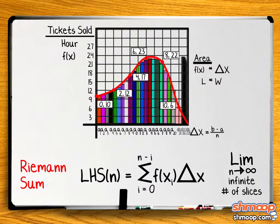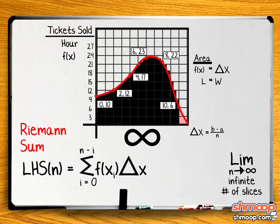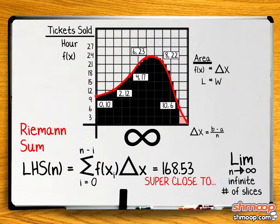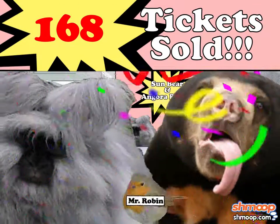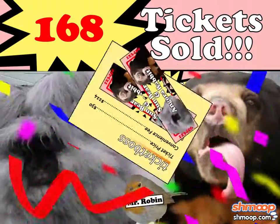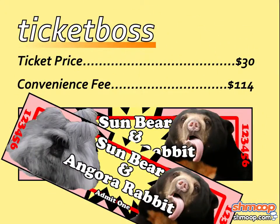Taking this limit as n approaches infinity gives us a total area of 168.53, which is super close if you compare it to the approximation found with rectangles. Looks like Mr. Robbins' friends are pretty popular with 168 total tickets sold. Woohoo! Impressive, especially considering that huge Ticketmaster markup. Sorry, Ticketmaster. We love you. We do.